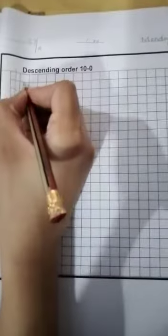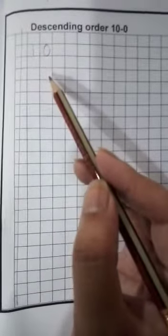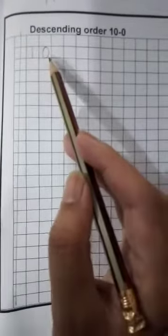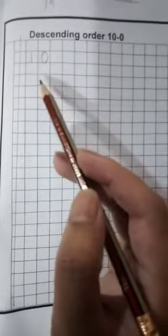You have to write 10 here. When we write 10, we have to keep the tens and ones concepts in mind. After 10, we write 9. And we will not stop at 1, we will write down to 0.